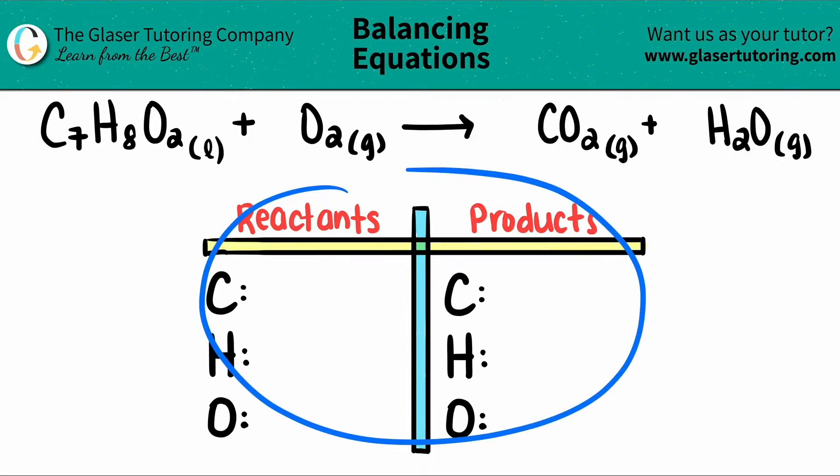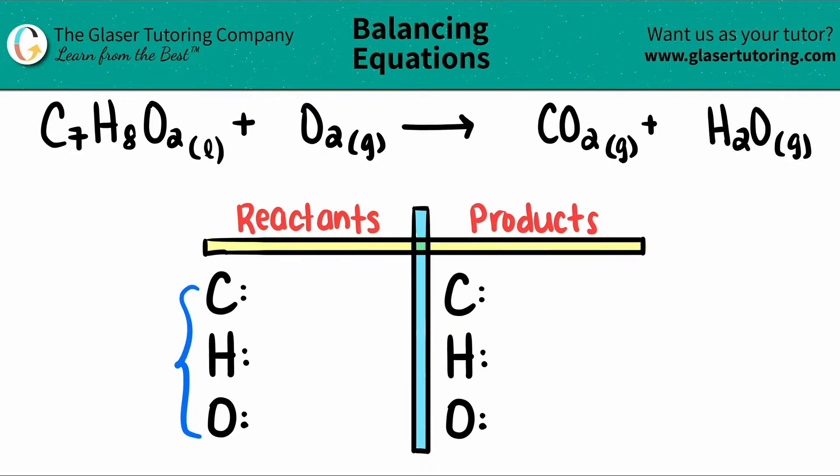I have my chart here for my reactants and the products, and I already listed all the elements that I see that are on the left and the right sides. All we have to do is just say how many we have of each starting, and then we're going to start balancing. Let's start with the left side.